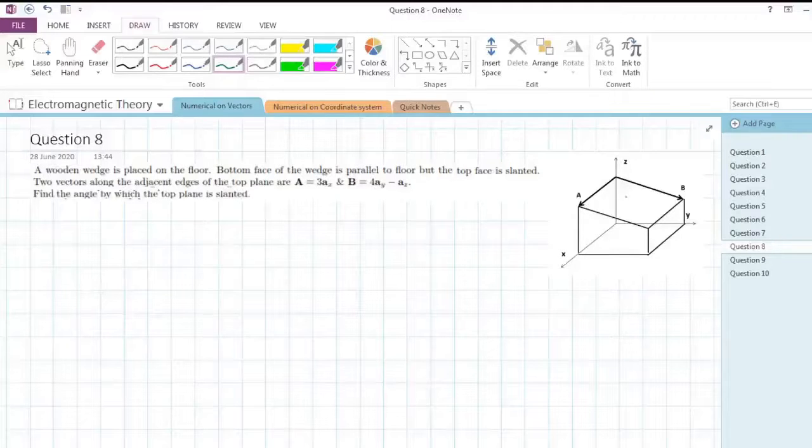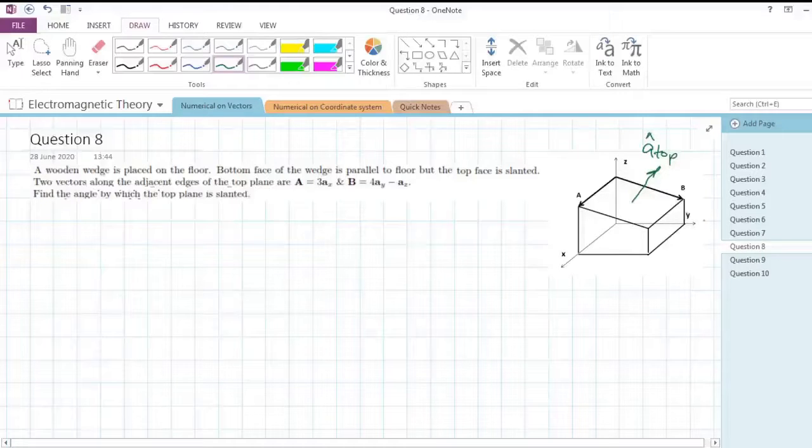This question says that there is a wooden block with a flat bottom but tilted top. We need to find by how much angle this top is tilted compared to the floor. If we draw a normal perpendicular emerging from the top surface, this unit vector, let's name it a_top, will be a little tilted because the surface is tilted.